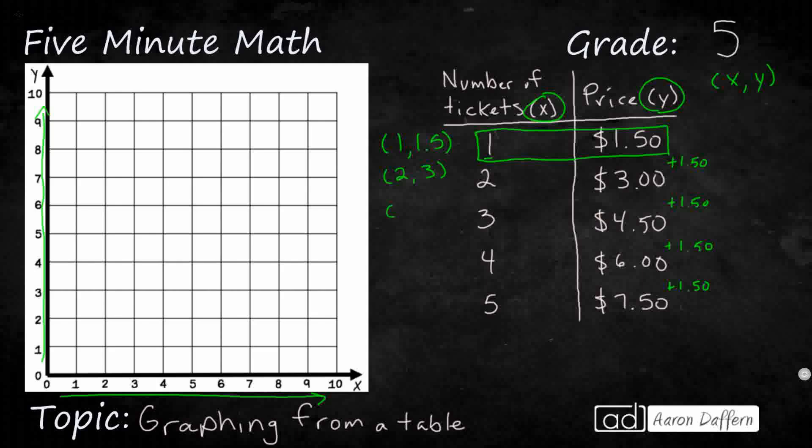Now this third pair is going to have an x value of 3, but my y value is going to be a decimal, 4.5 or four and five tenths. And then I've got my fourth value, which is 4 and 6. And then you notice this pattern, this fifth value...